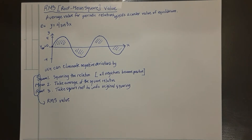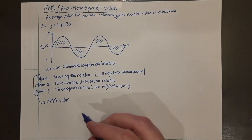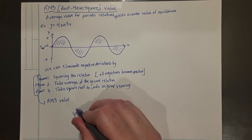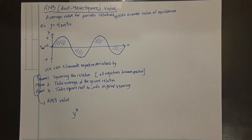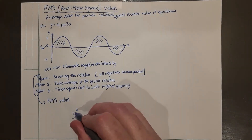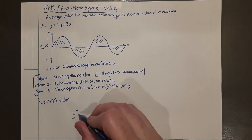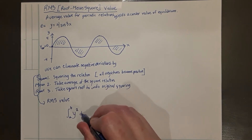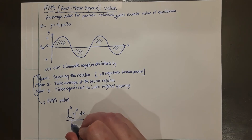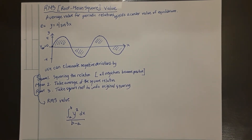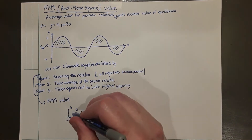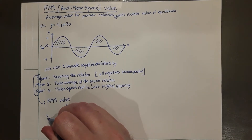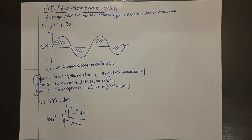The formula for root mean square is relatively straightforward — we just follow the steps. If you take any relationship y equals f of x, square that relationship, then find the average of this square by taking the area under the squared curve and dividing it by the interval width, that gives the average square value. Then take the square root, and there is the formula for root mean square value.